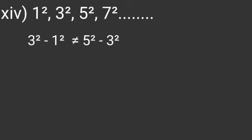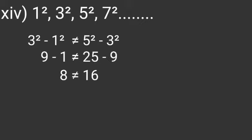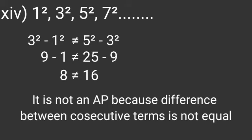Fourteenth question: 1 squared, 3 squared, 5 squared, 7 squared. Here we check 3 squared minus 1 squared and 5 squared minus 3 squared. 3 squared is 9, so 9 minus 1 is 8. Here 5 squared minus 3 squared means 25 minus 9, which equals 16. So 8 is not equal to 16, therefore it is not an AP because the difference between the consecutive terms is not equal.